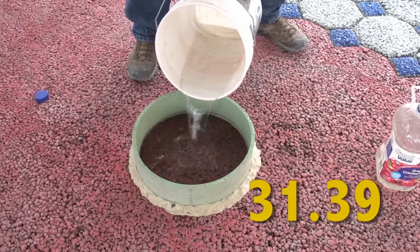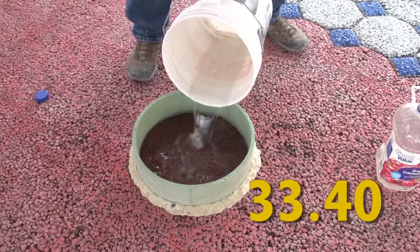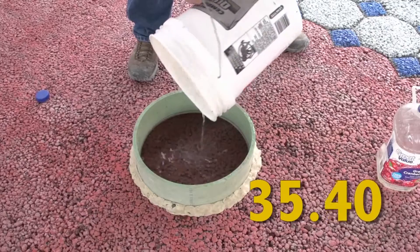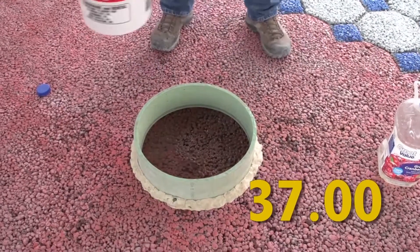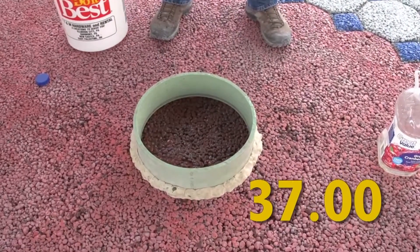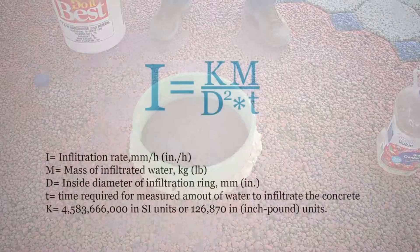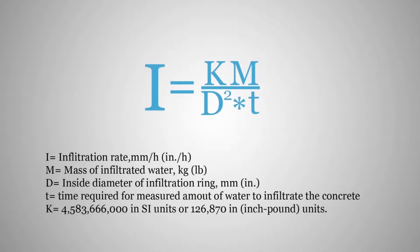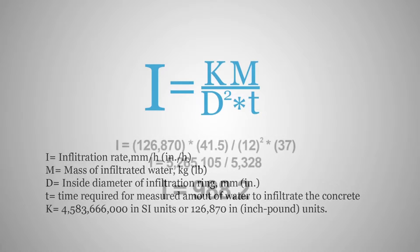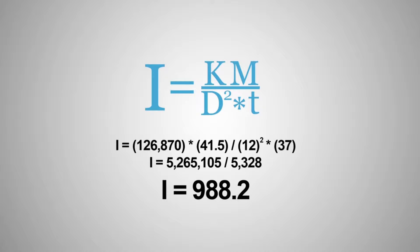Record the testing duration to the nearest tenth of a second. In this case, the water drained in 37 seconds. The final step involves calculating the drainage rate of the pavement. Here is the equation used for this calculation. Based on this equation, we can calculate that our test pad drains at a rate of approximately 988 inches per hour.